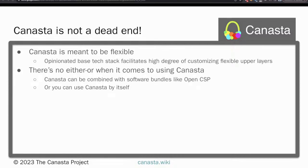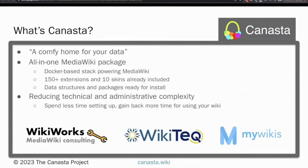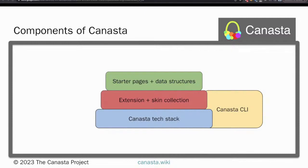Last year at SMWCon we had questions about how Canasta and OpenCSP work together. Canasta is not a dead end — using Canasta does not lock you into an opinionated way to configure your wiki. Canasta is meant to be very flexible and is a great foundation on which to build your own wiki stack. OpenCSP can run on Canasta. Everything above the tech stack is completely customizable — everything not in blue is customizable.